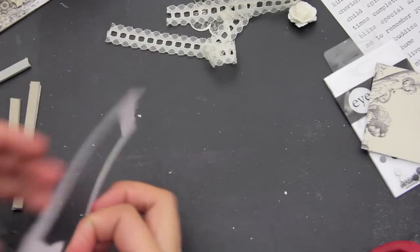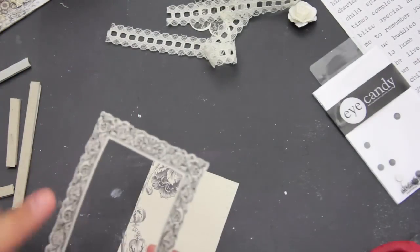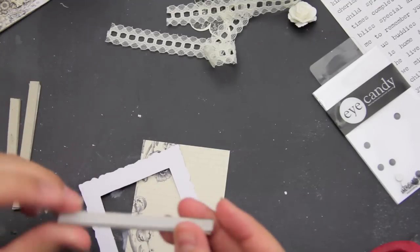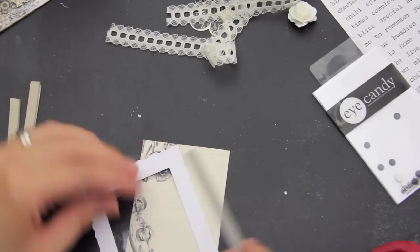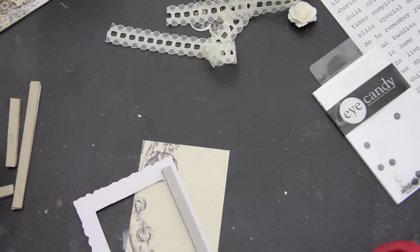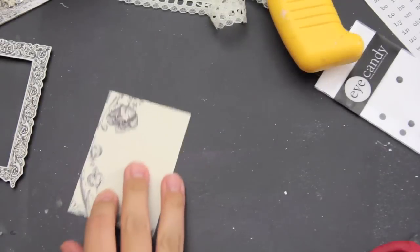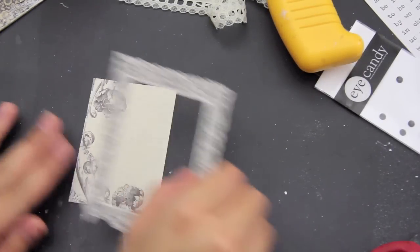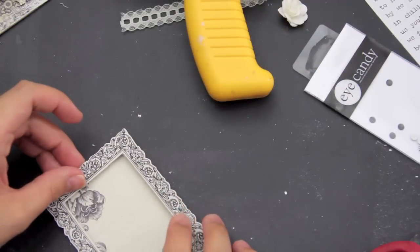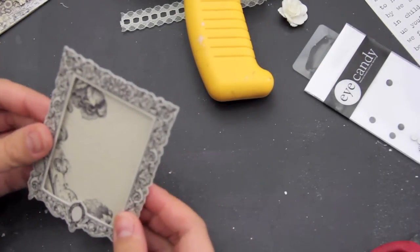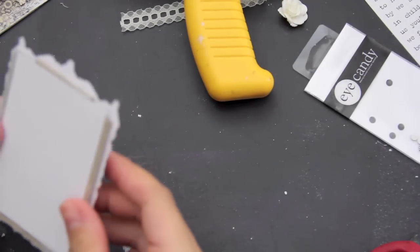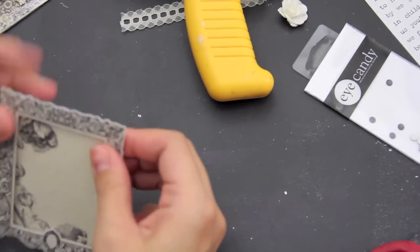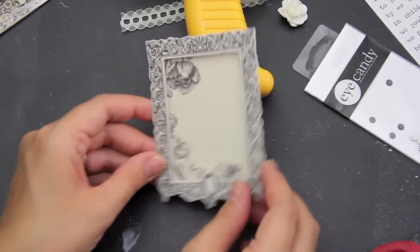Next thing you're going to want to do is put the chipboard and you can even make it more dimensional just layering more pieces together. But this is perfect for me. So I'm going to adhere these. Next I'm going to take the frame and put it on this little ATC card. I'm just going to eyeball this, just like that.